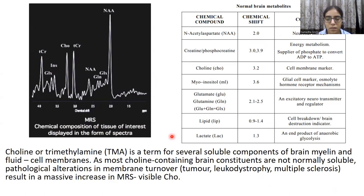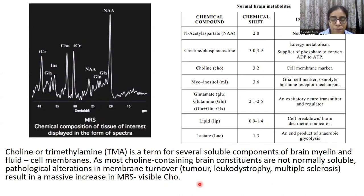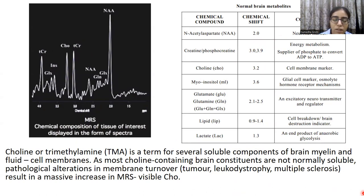Choline peak consists of several soluble components of the brain including myelin and cell membranes. As most choline-containing brain constituents are not normally soluble, pathological alterations in membrane turnover — in conditions like tumors and MS — result in massive increases in MRS-visible choline.